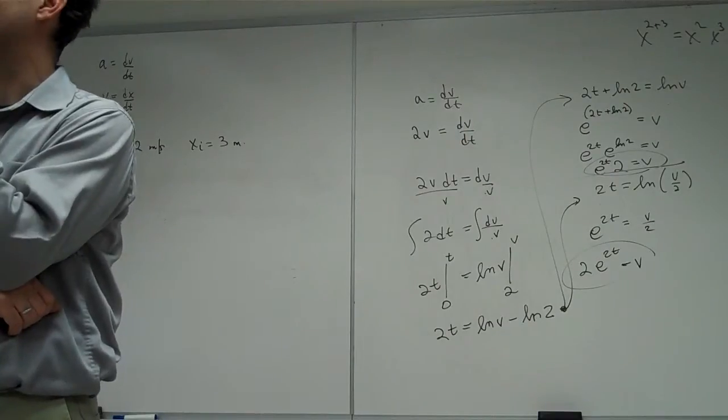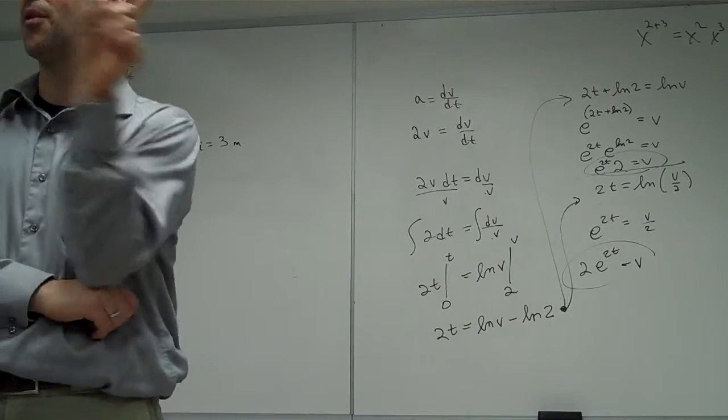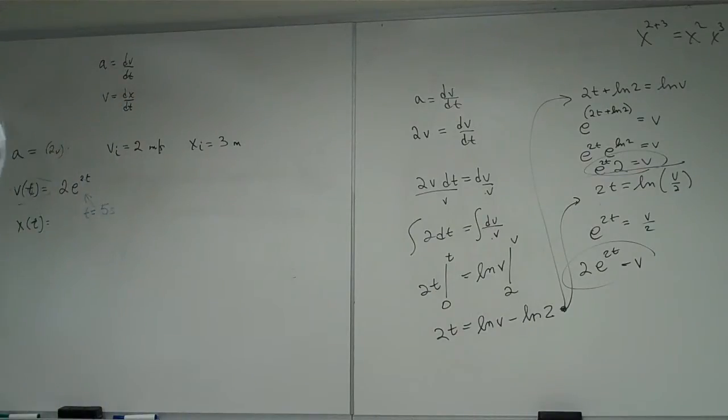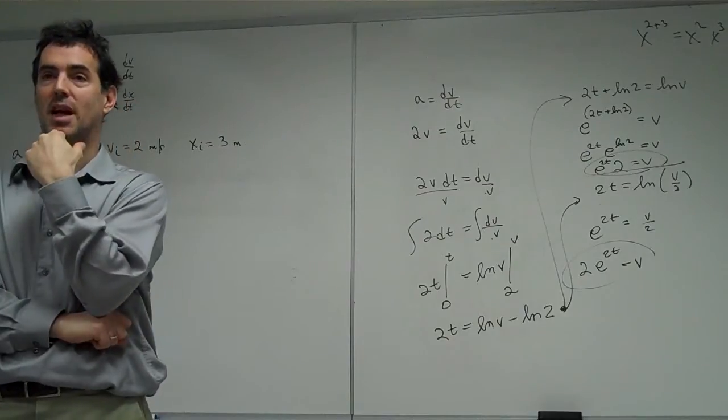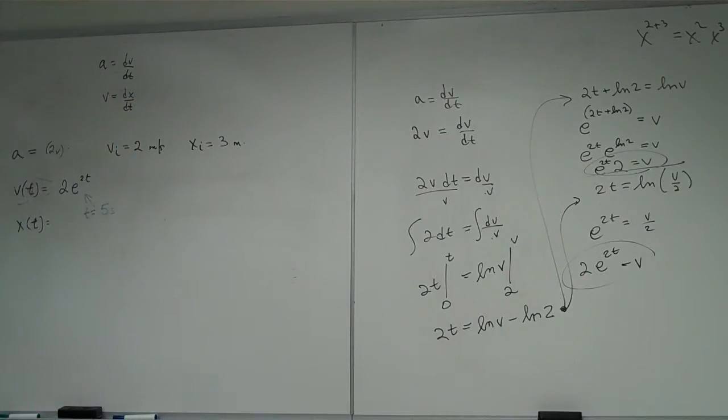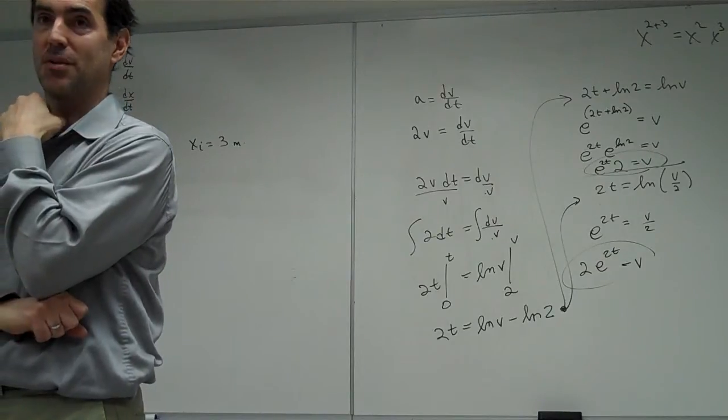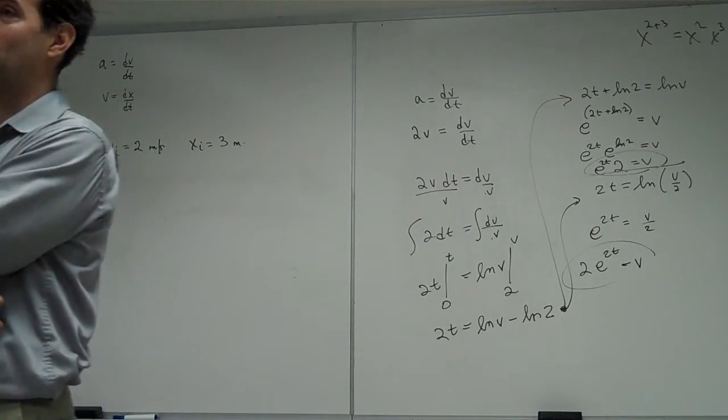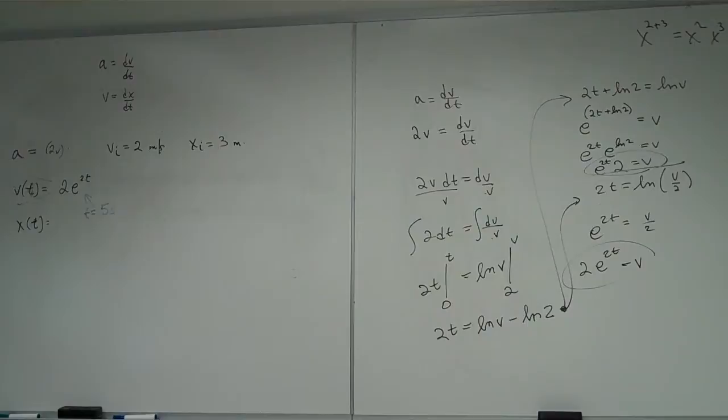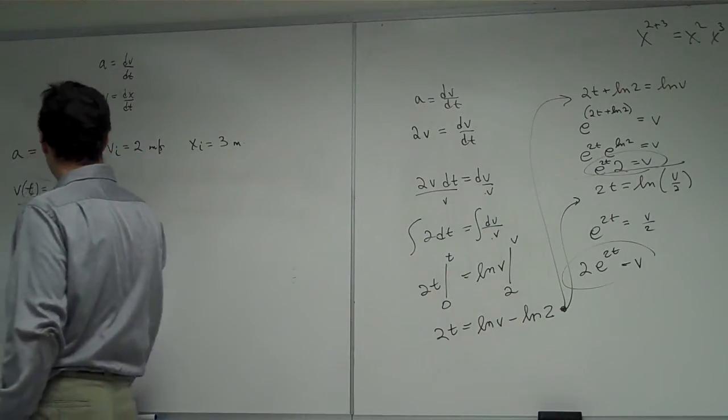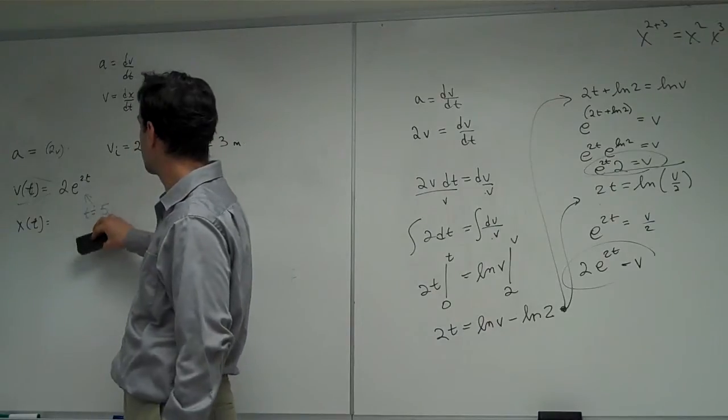So in one second, the sound will go 300 meters. Three football fields in one second. It's pretty fast, but not a million meters per second. So the speed of sound is about 300 meters per second. After 5 seconds, I'm traveling 44,000 meters per second. So I went past the sound barrier, I'm flying, okay?